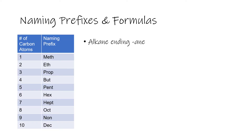In this video we're going to look at naming and drawing alkanes — our simplest hydrocarbons. Remember, hydrocarbons are organic compounds that just contain carbon and hydrogen. Alkanes have just carbon-carbon single bonds. This naming system is also going to serve as a foundation for naming other hydrocarbons and other organic compounds as we go through this chapter and a few of the next chapters.